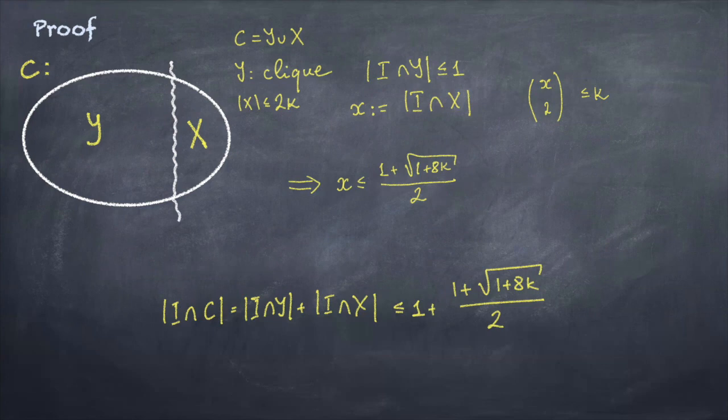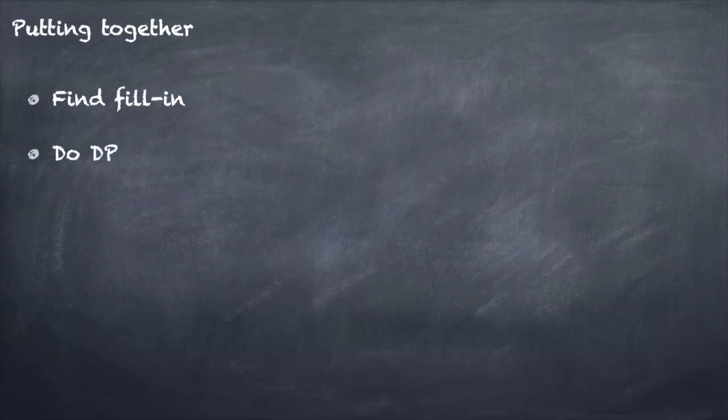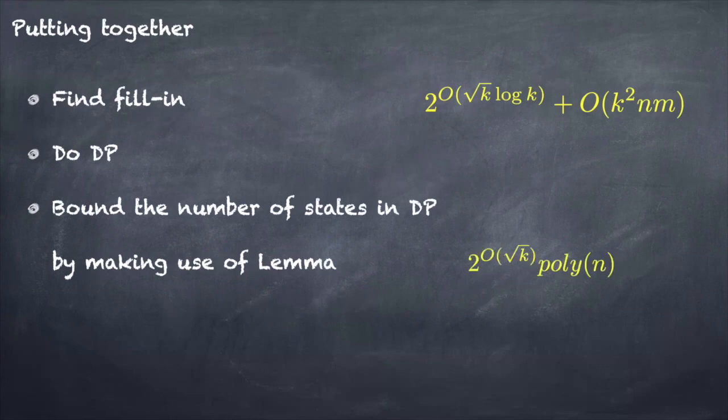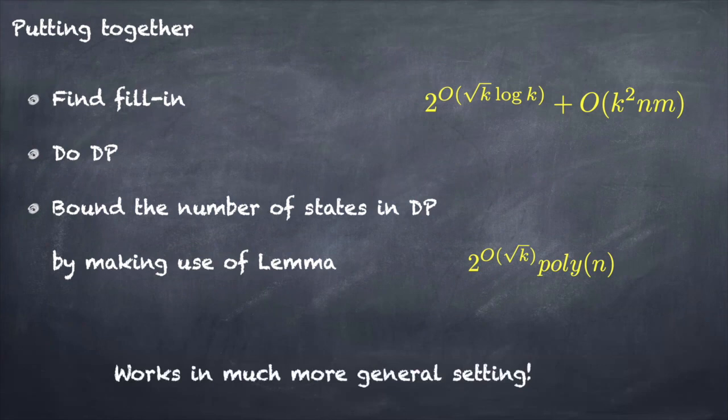So this is a sketch of what's happening with the lemma and putting it all together. How the algorithm works: first of all we find a fill-in, we do dynamic programming, and then to estimate the running time of dynamic programming we bound the number of states in the programming by making use of the lemma. And this works in much more general settings for much more general problems.